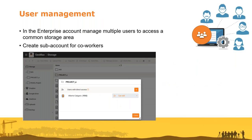The last function I want to show is something only related to the Enterprise account. The difference between pro and enterprise is that in enterprise we have the possibility to manage more users — we can create sub-accounts for co-workers, interact with them via chat, define different access permissions to folders in the storage area, and more.